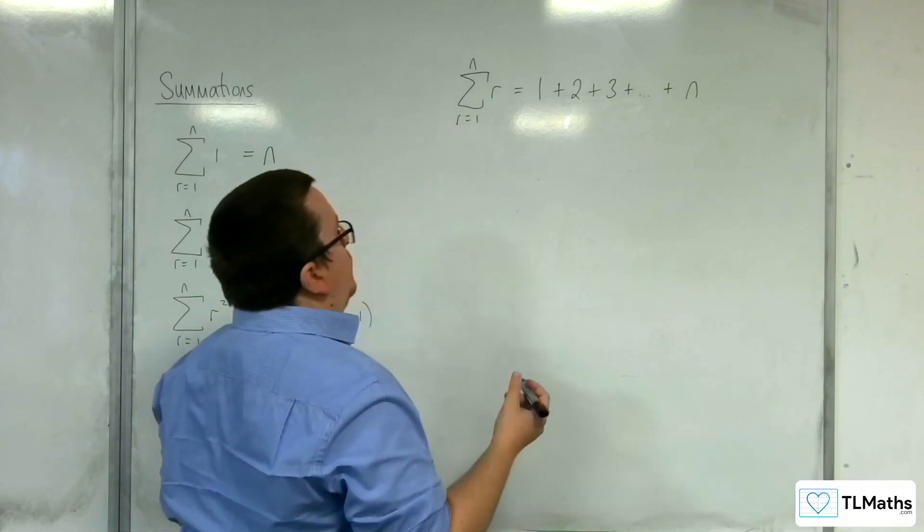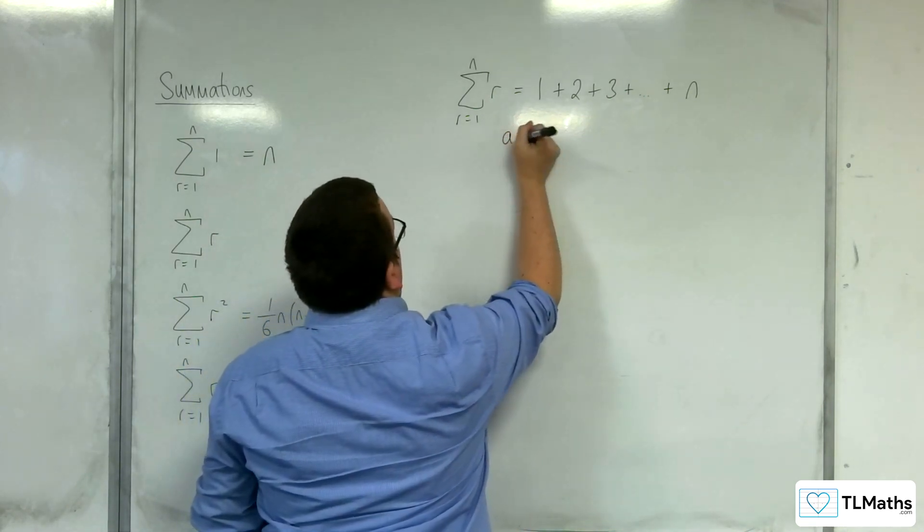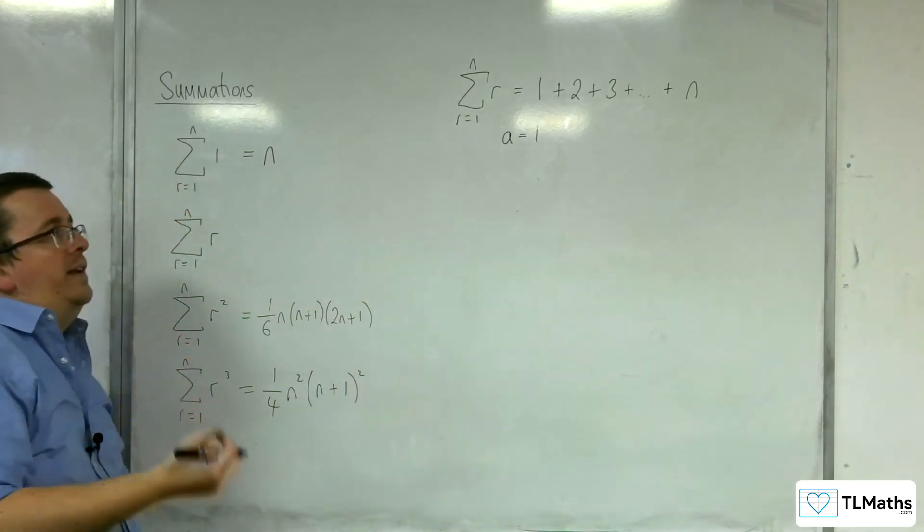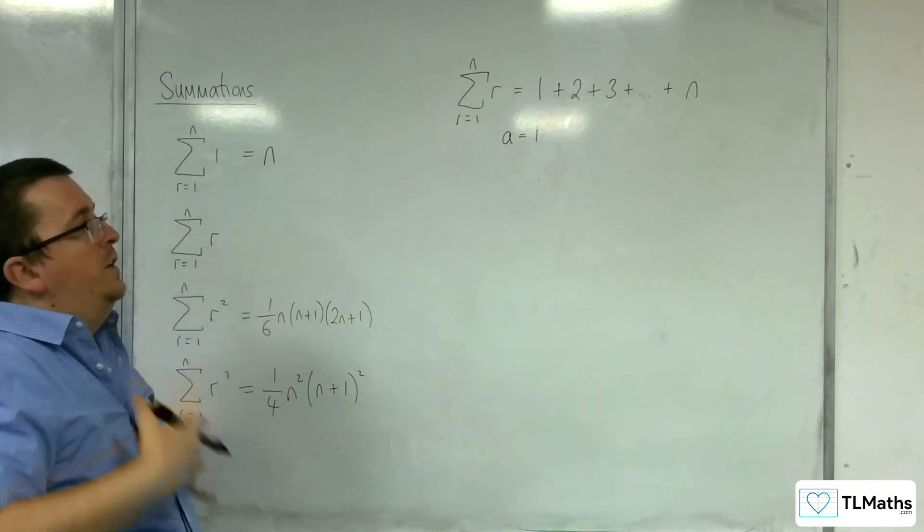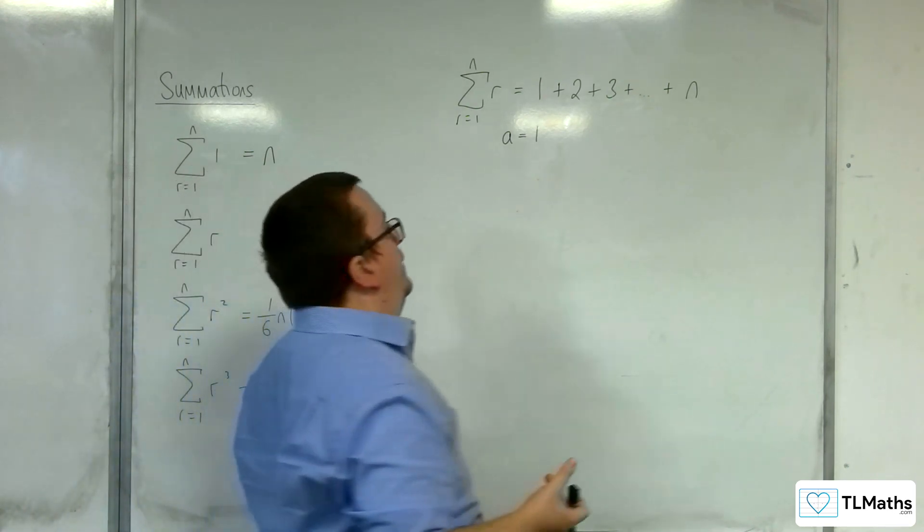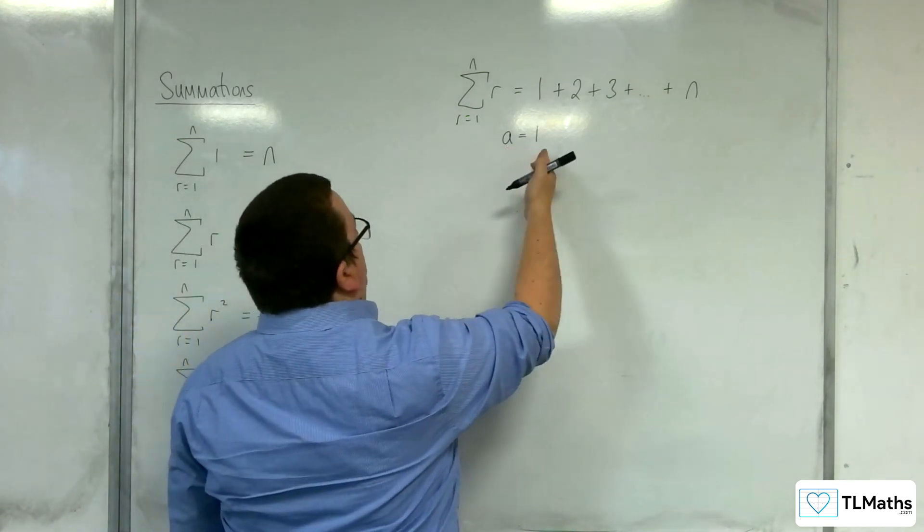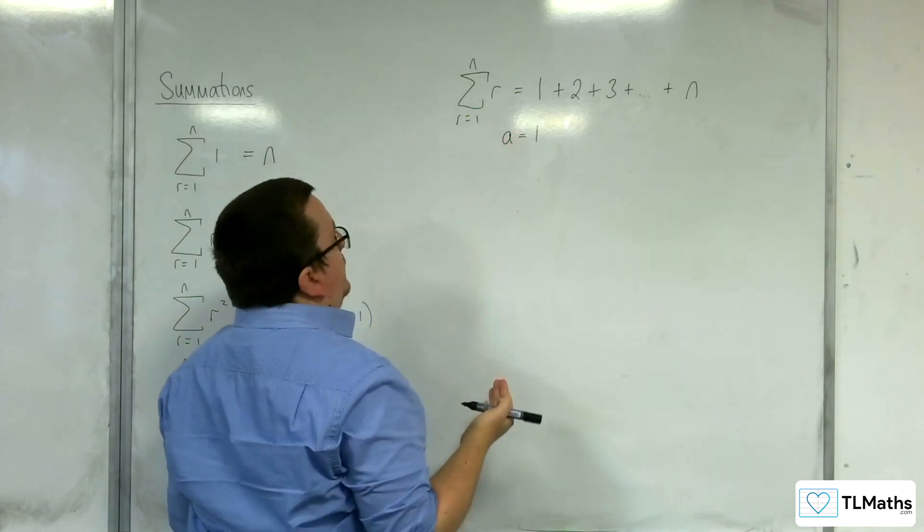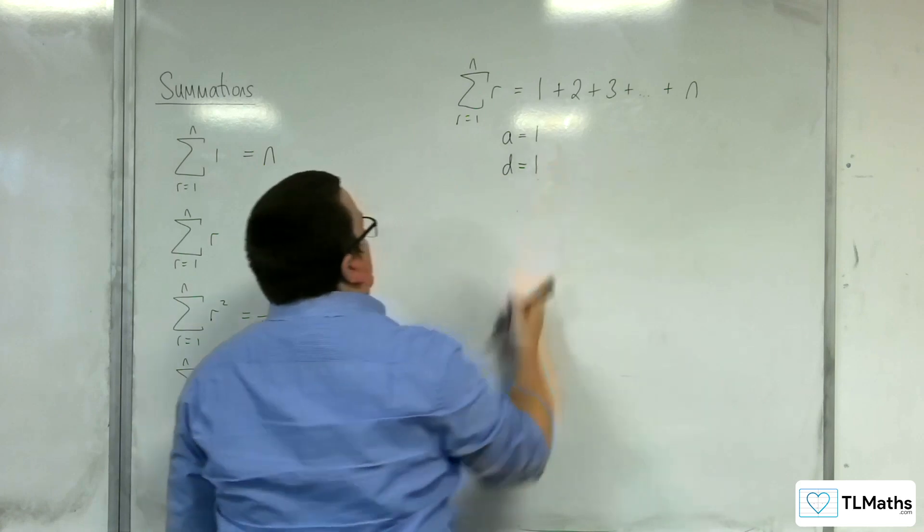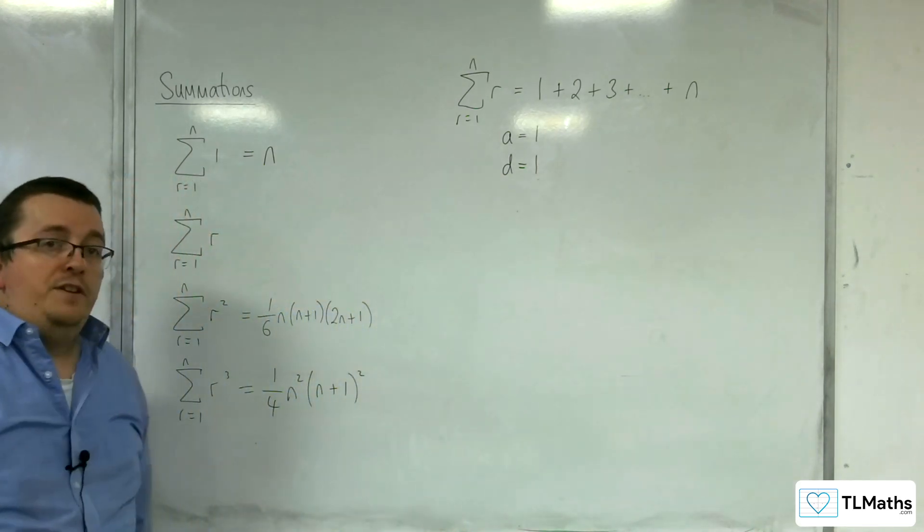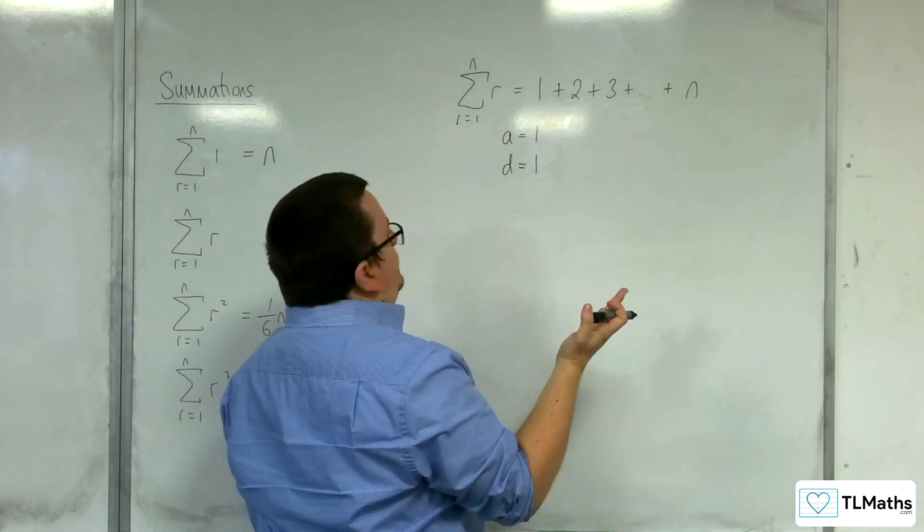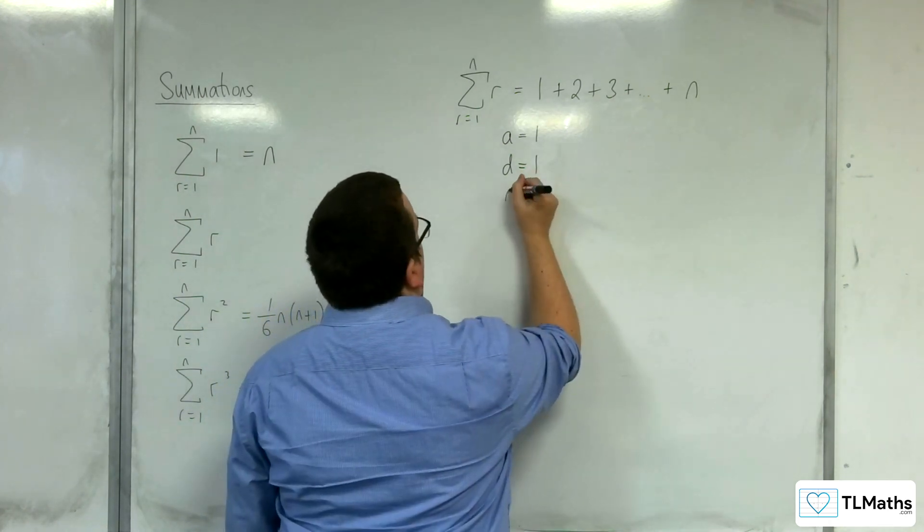This is an arithmetic series. What do we know about it? If you haven't done sequence of the series before, if you haven't seen this before, this might look a little bit alien to you, but this is the way that we do this. The first term is 1. A is representing the first term. The common difference is going up in 1s each time. That's 1. And the number of terms we have is n.